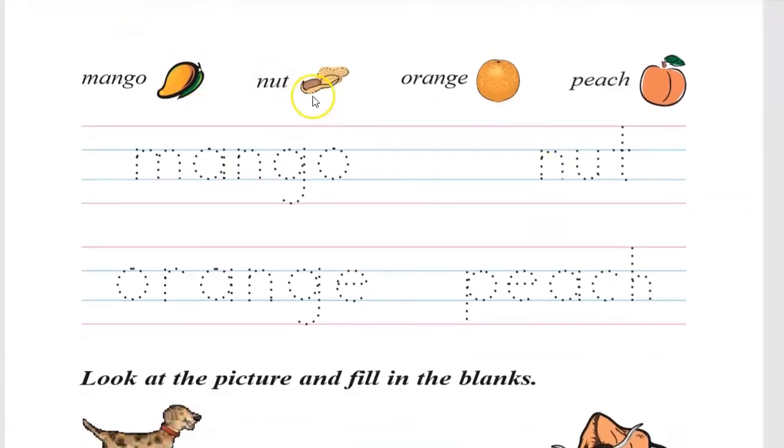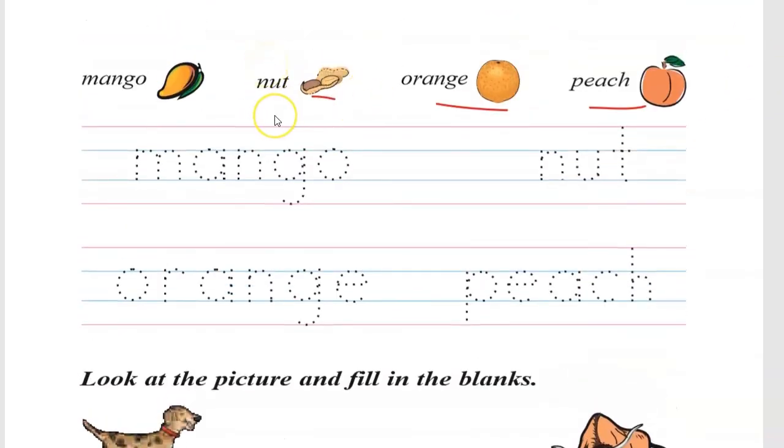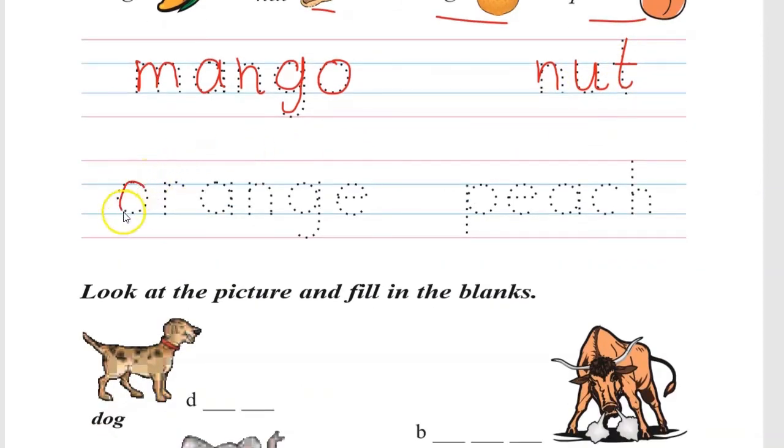Now mango, nuts, orange, peach. Nuts, a fruit. Now what I will do? I will match the spelling. M-A-N-G-O, Mango. N-U-T, Nut. O-R-A-N-G-E, Orange. P-E-A-C-H, Peach.